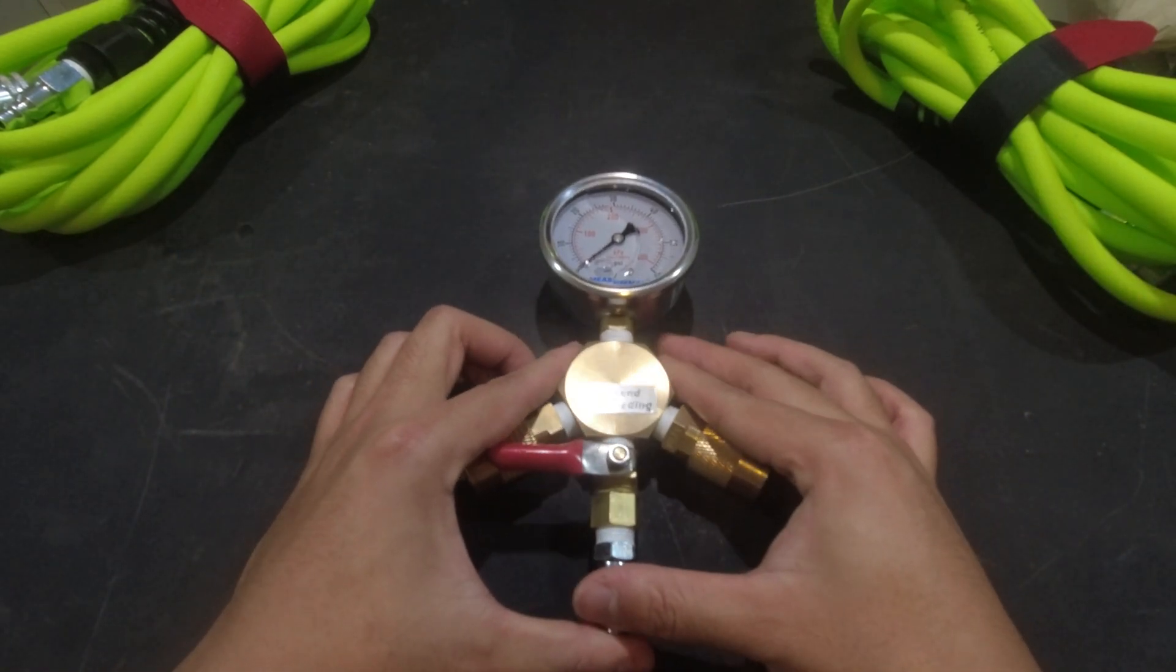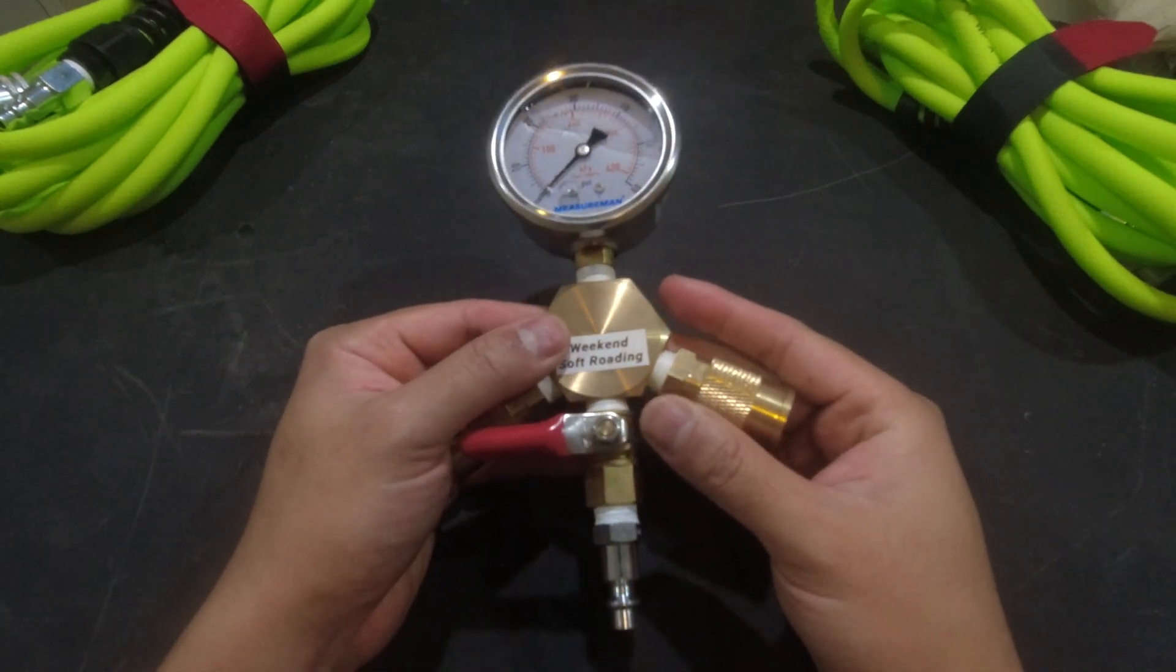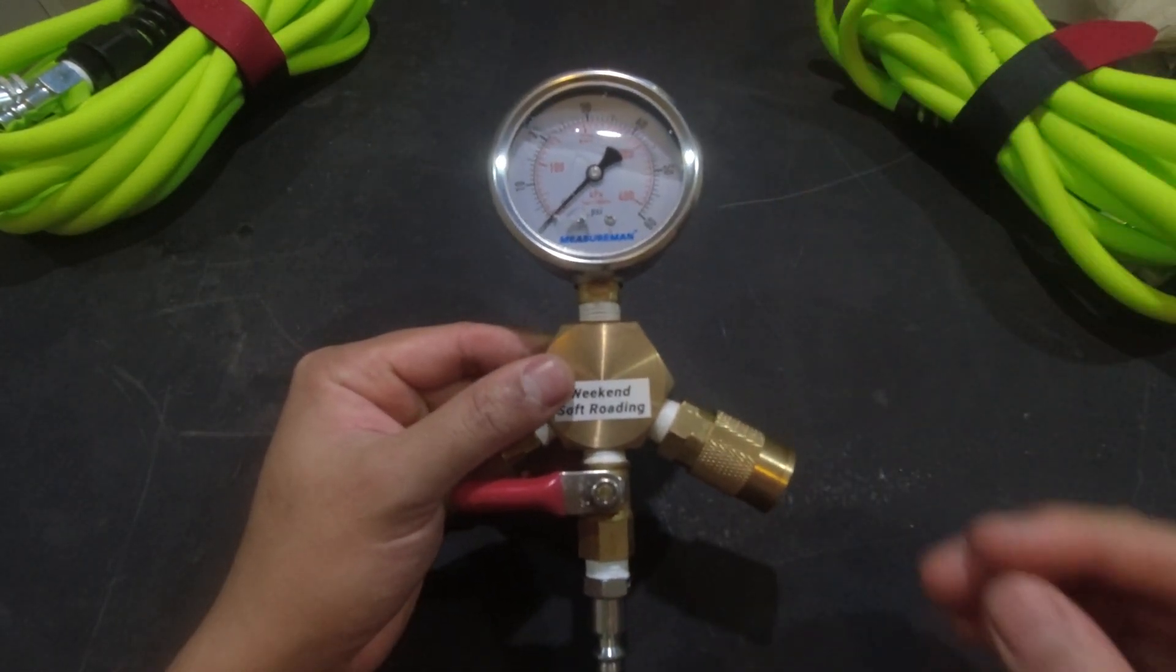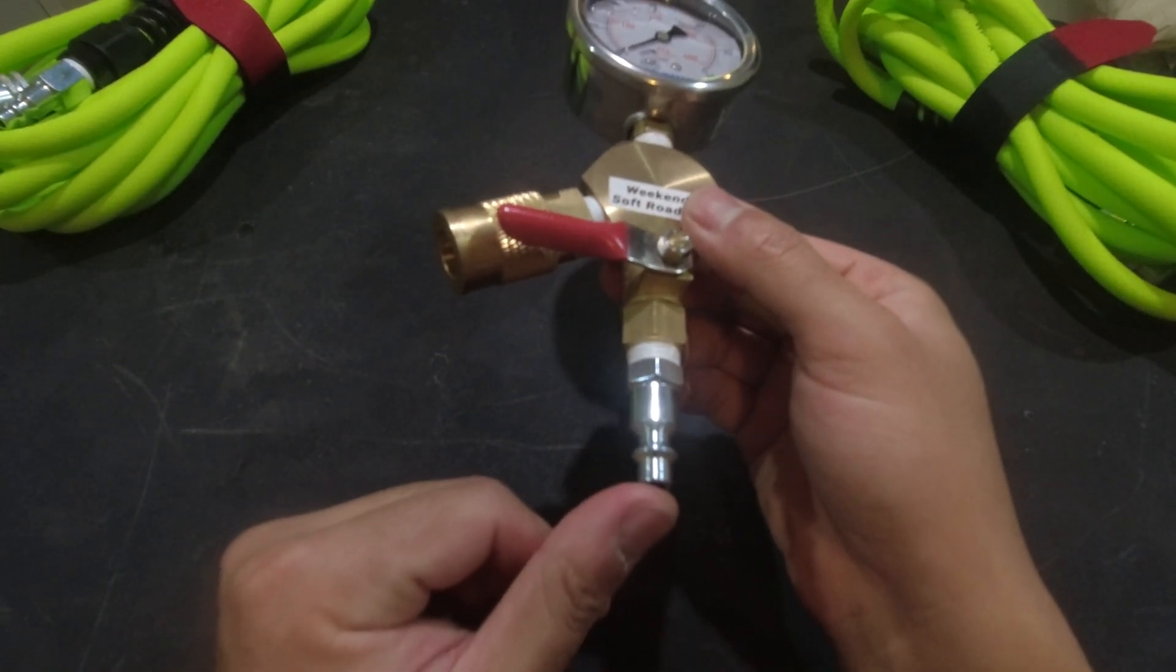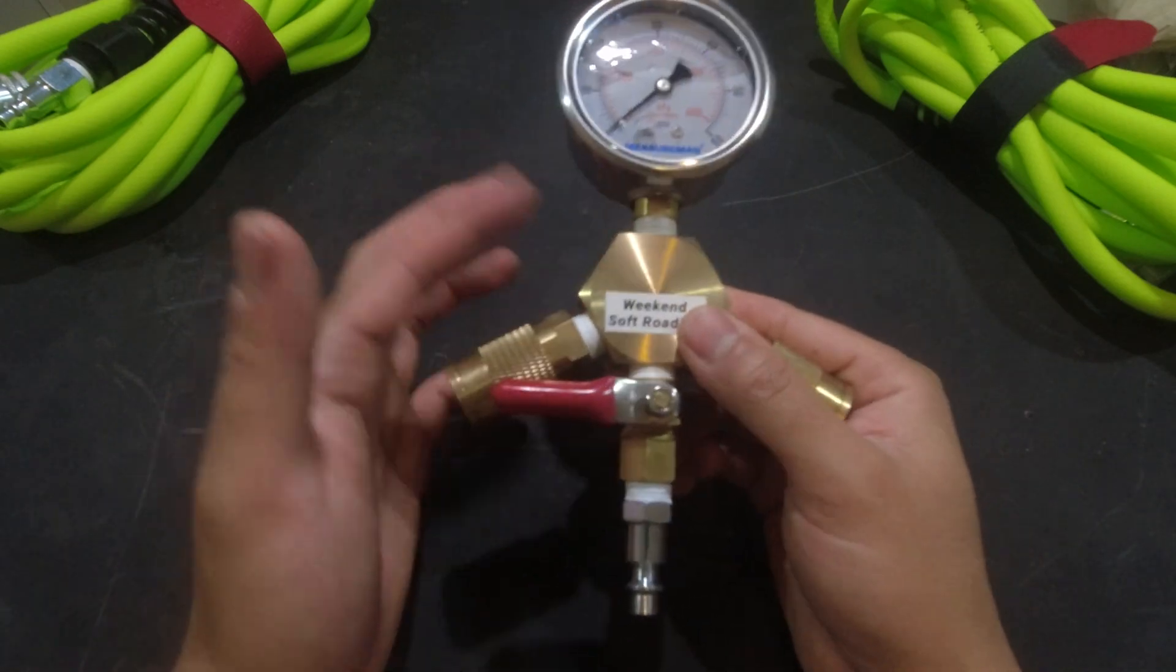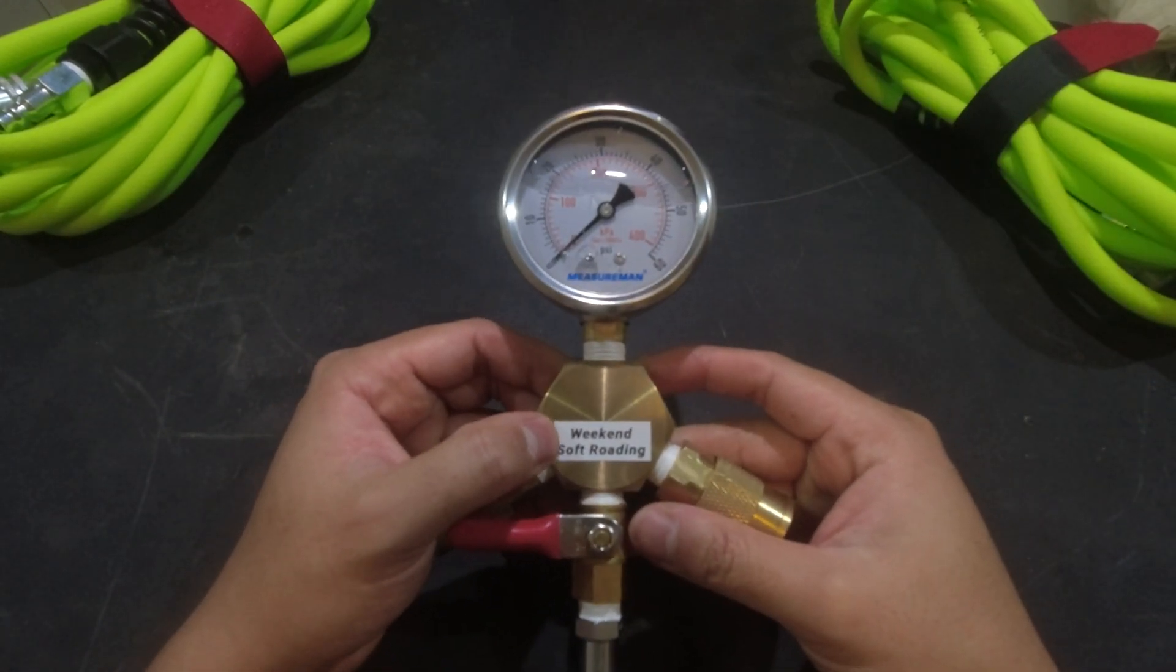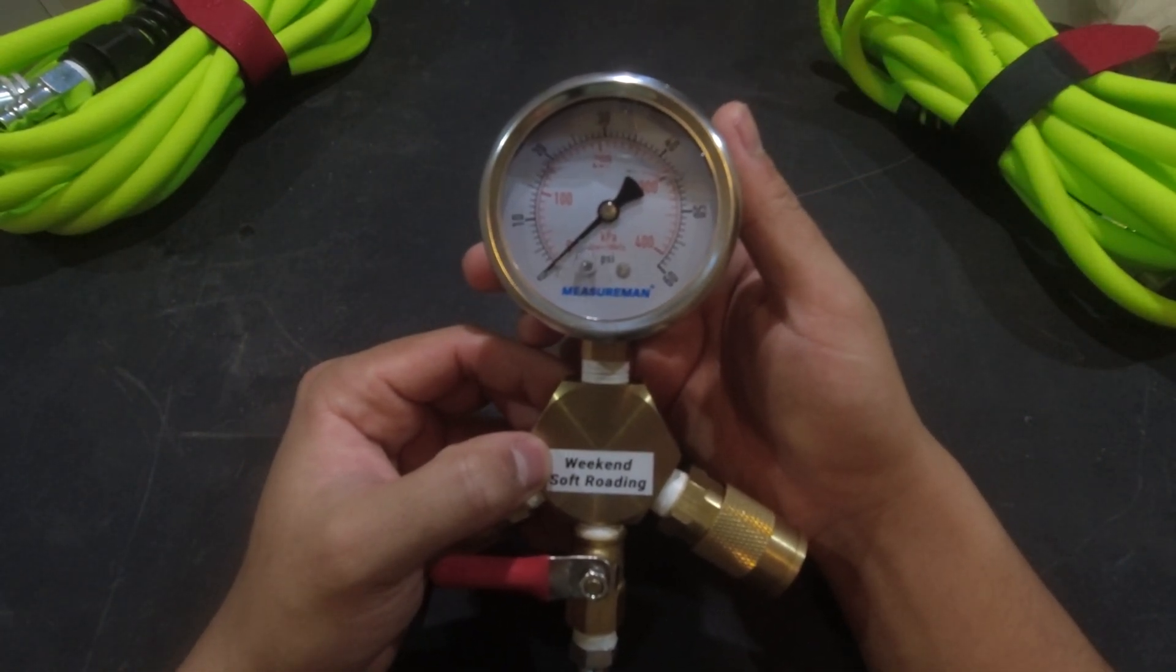The first thing I want to talk about is the manifold itself. This is the heart of the system where everything connects up and where you can see the pressure, all the fittings, and the fittings to fit on the air compressor. The first thing you see is this Measureman liquid filled dial.